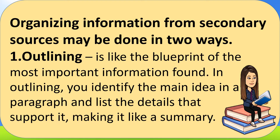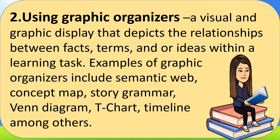Organizing information from secondary sources may be done in two ways. The first one is outlining — it is like the blueprint of the most important information found. In outlining, you identify the main idea in a paragraph and list the details that support it, making it like a summary. Number two, using graphic organizers — a visual and graphic display that depicts the relationships between facts, terms, and ideas within a learning task. Examples include semantic web, concept map, story grammar, Venn diagram, T-chart, and timeline, among others.